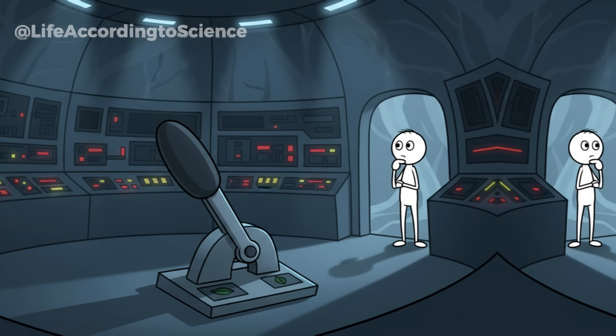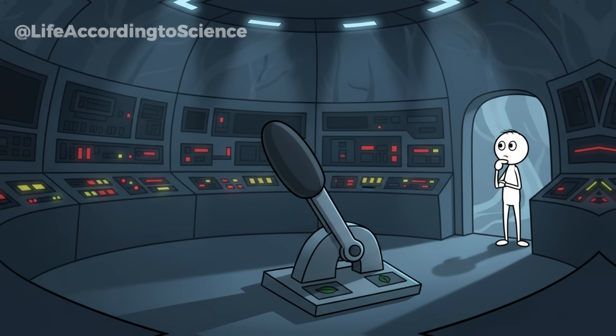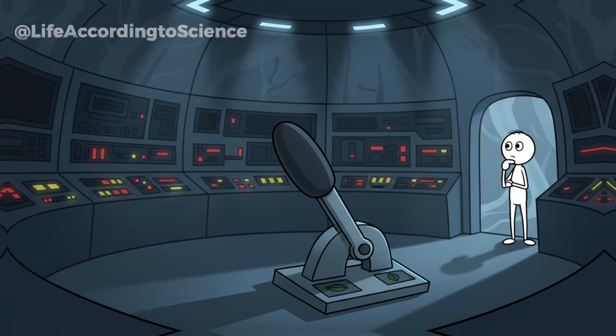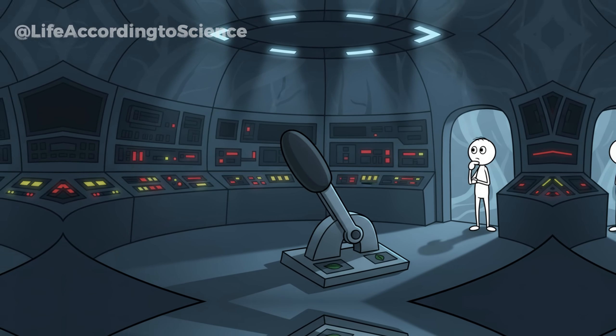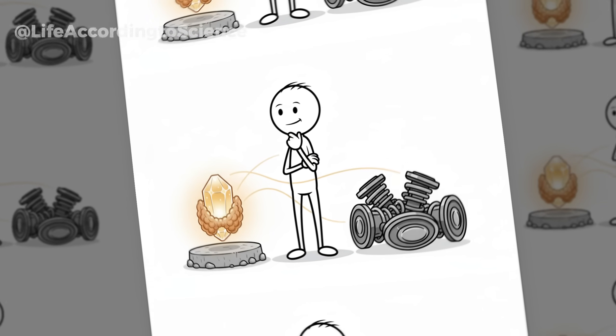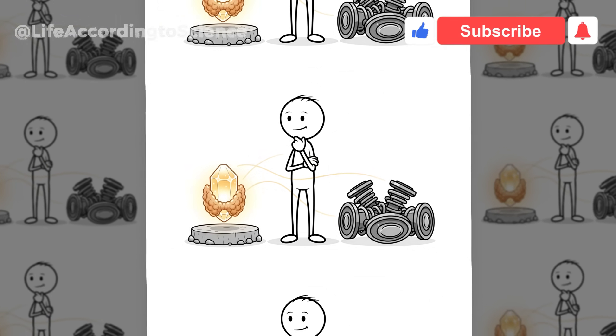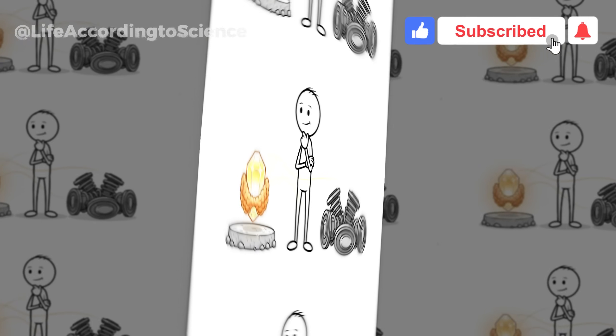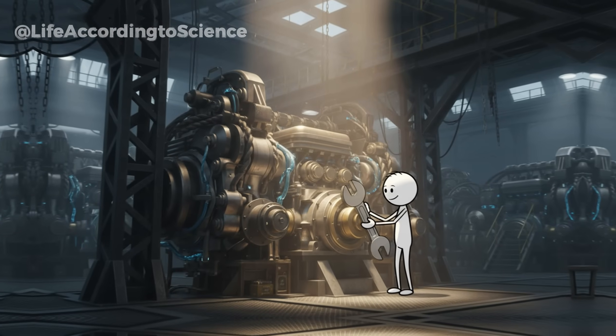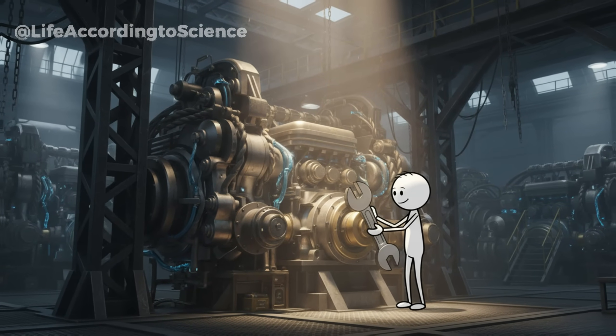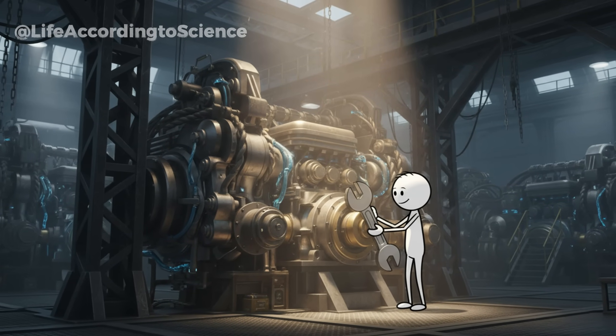When you eat too little for too long, your metabolism doesn't stop. It adapts. It becomes smarter, more efficient, burning fewer calories to keep you alive. That's why extremely restrictive diets often backfire. When your body senses a shortage of food, it lowers your thyroid hormones, slows your calorie burn, and starts breaking down muscle tissue, the very thing that keeps your metabolism active.